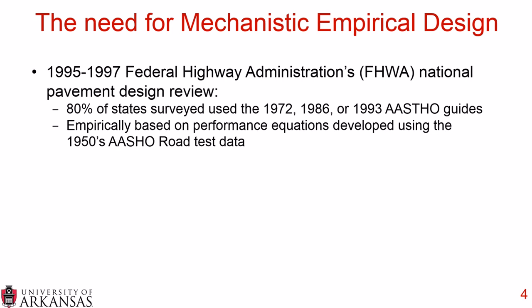The need for mechanistic empirical design comes from discussions in the mid-1990s, when the Federal Highway Administration's National Pavement Design Review found that 80% of the states used the 1972, 1986, or 1993 AASHTO Design Guide. All three of these guides are rooted in empirically based performance equations that were developed using the 1950s AASHTO road test data. So in the mid-90s, 80% of the states were using a pavement design method based on data collected in the 1950s, and they decided we needed to move in the direction of ME.